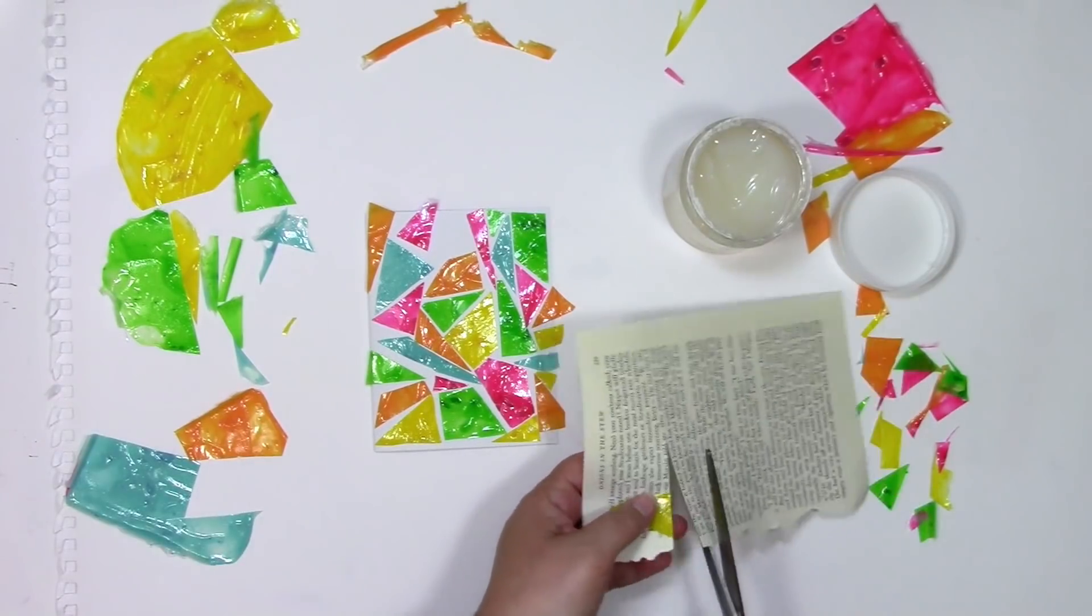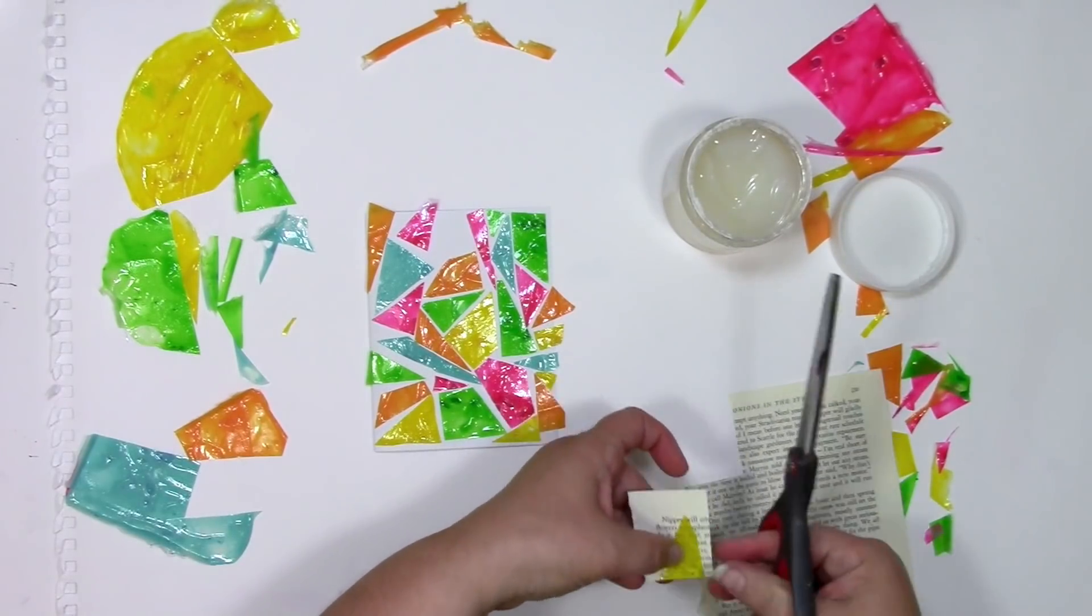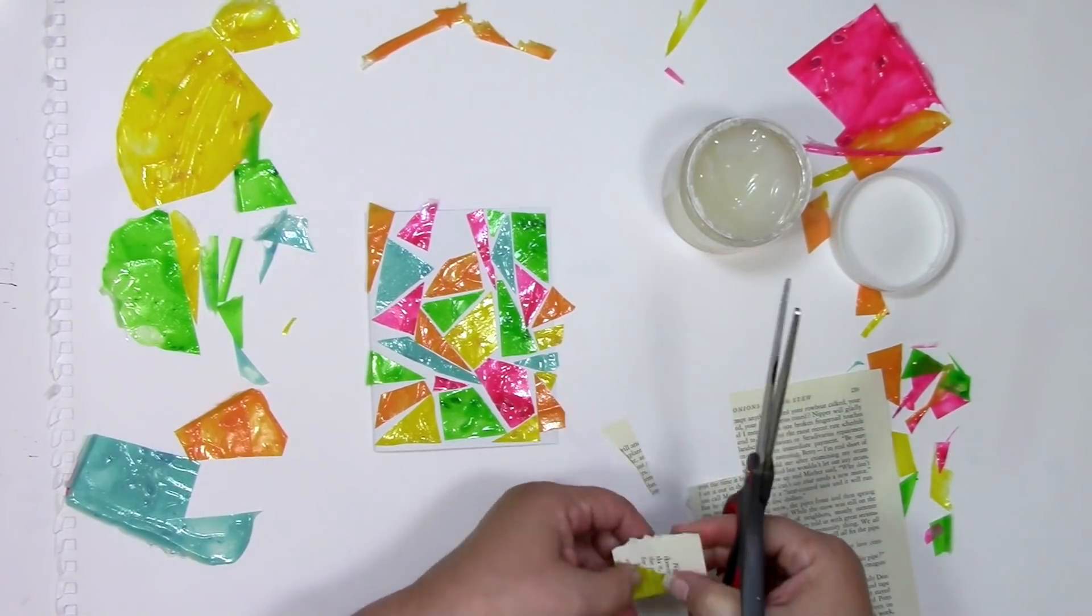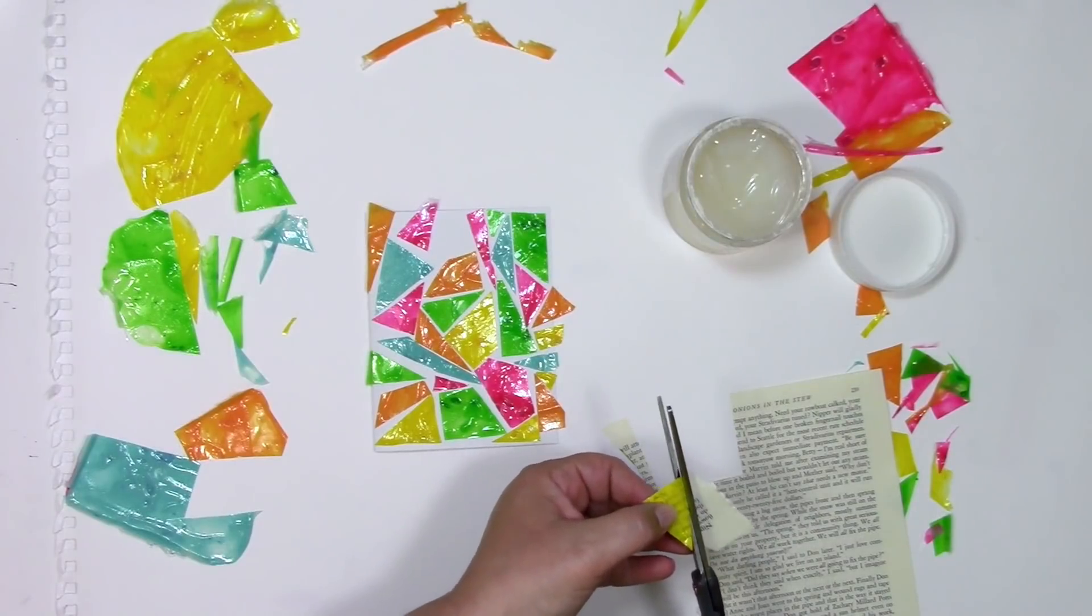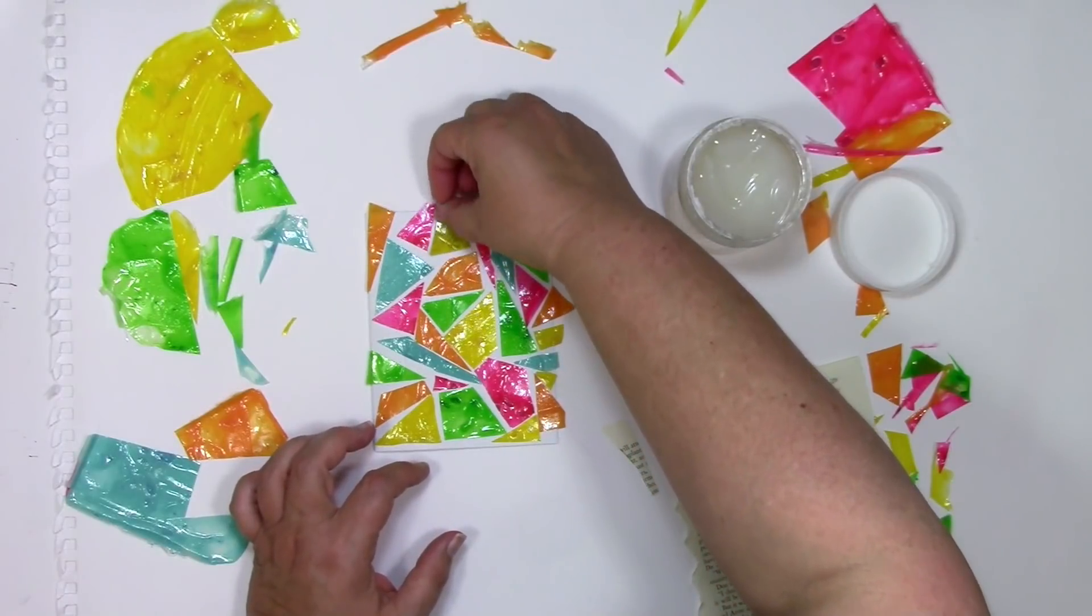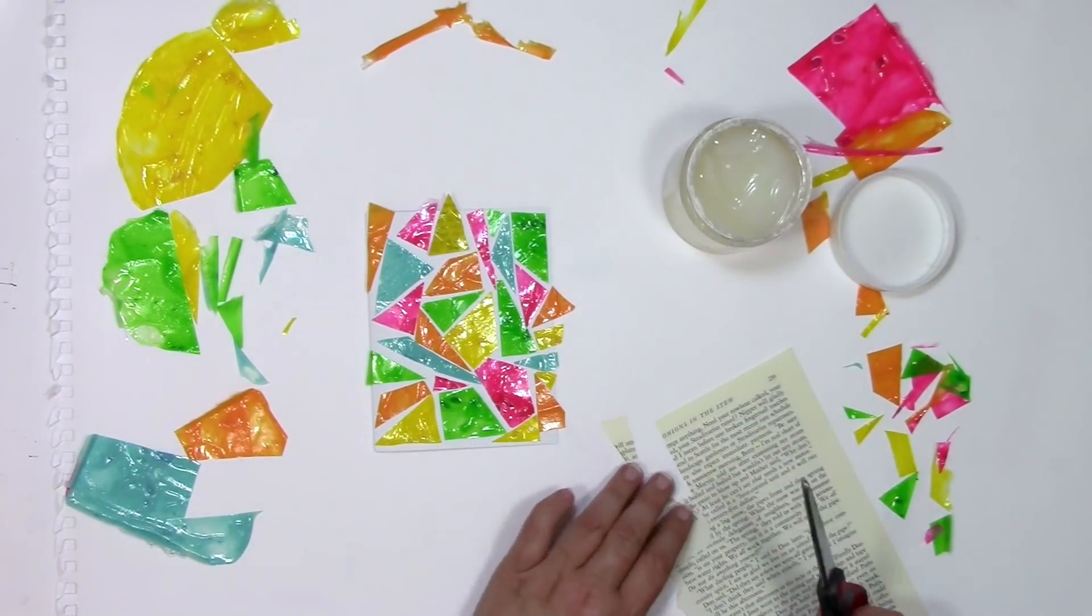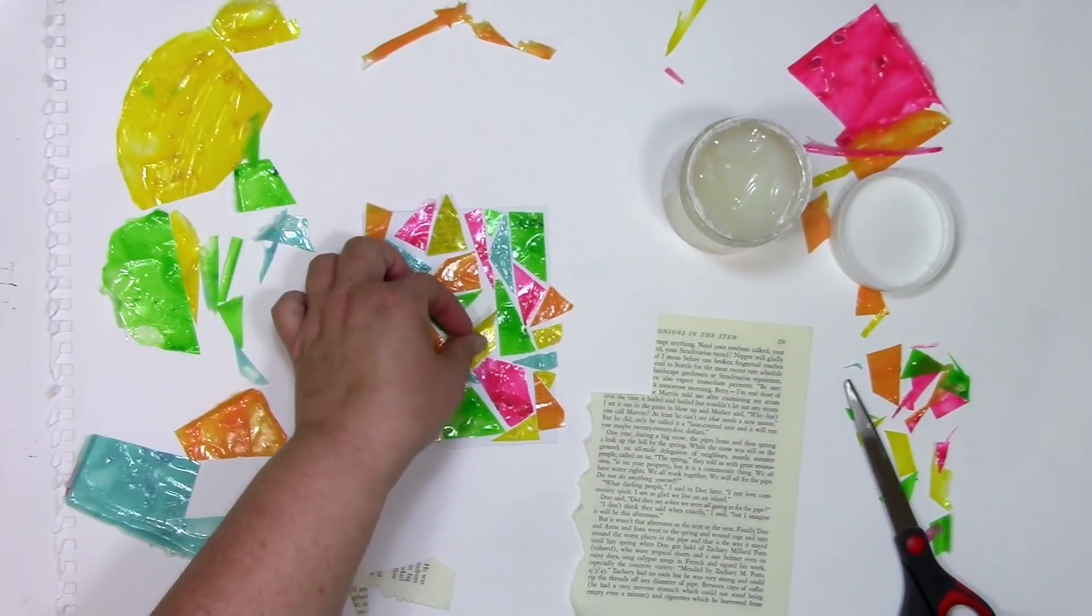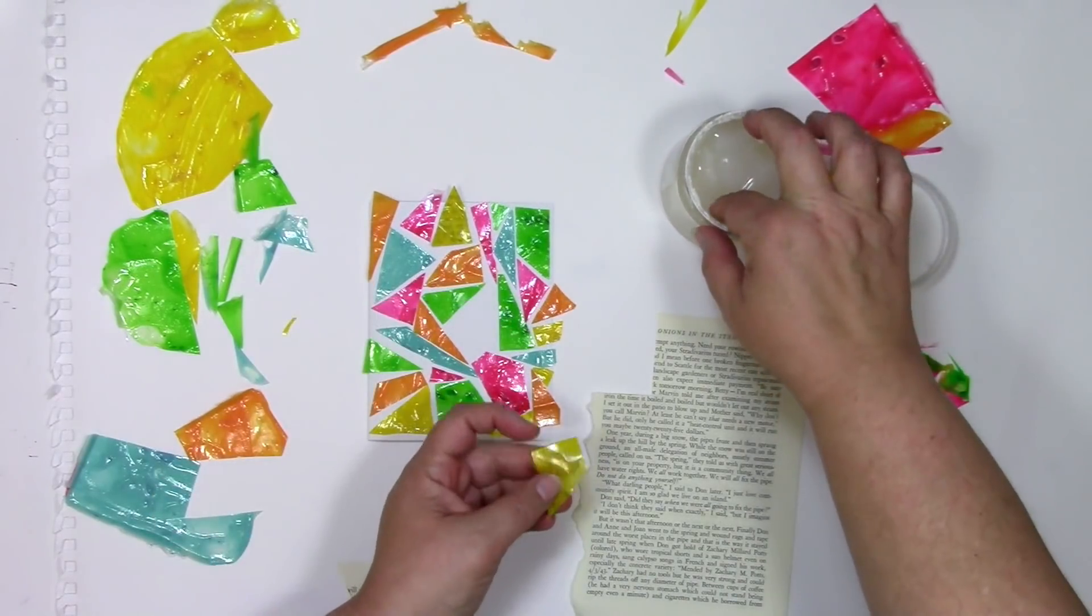Now if I had thought this through completely perfectly ahead of time, and this was a clear and calculated plan, then I would have probably put the big sheet of yellow right onto a piece of book text and cut it all out at once. But since I didn't think of it until after that, no big deal. I'm just going to glue each piece onto book text, do this to them, and then put it back in its spot in the collage.